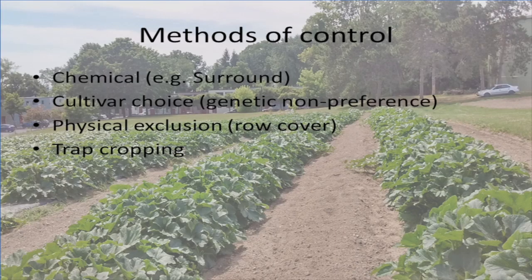In addition, or paired with techniques like applying chemicals like Surround to protect plants from striped cucumber beetles, my program is also developing plants that are just naturally less preferred by striped cucumber beetles, so they'll still taste great, have a great yield, but not be damaged by beetles. Finally, there are physical methods of excluding the striped cucumber beetles from your crop through the use of row cover and trap cropping. These are the focus of the rest of this video.